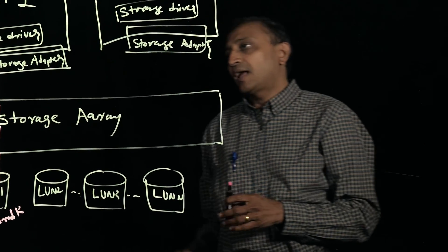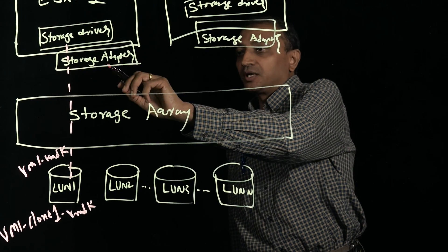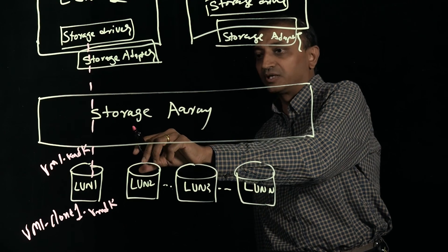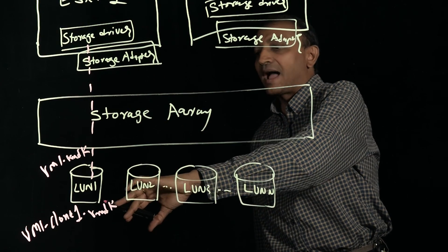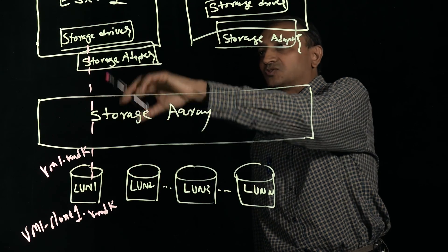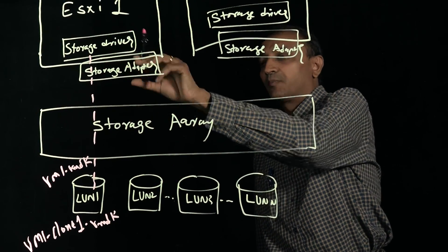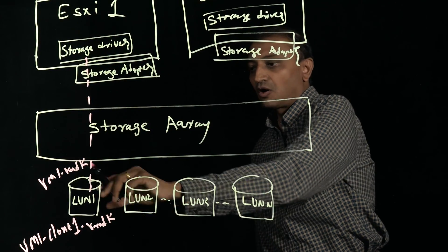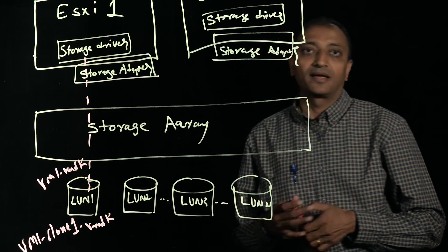So if VAAI plugin is leveraged, this particular operation is offloaded to the storage array as a single X-copy operation and the rest is handled by the storage array in the backend, where hypervisor CPU cycle is not at all being used and hypervisor at that time is not involved in the rest of the bulk copy operation. This saves a lot of memory, storage bandwidth and CPU cycles.